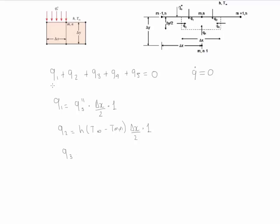Q3 is due to conduction so we have K. The area that it crosses is delta Y divided by 2 times 1. The temperatures that it goes, it goes from T M minus 1 N to the node T M N and the distance that it crosses is delta X.